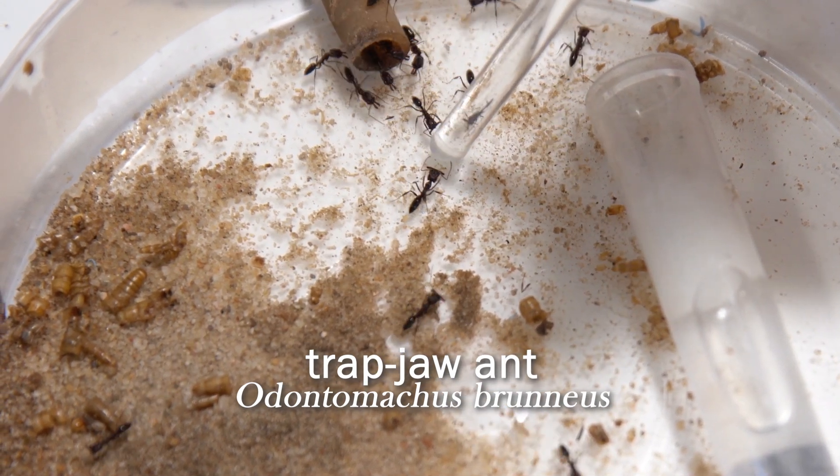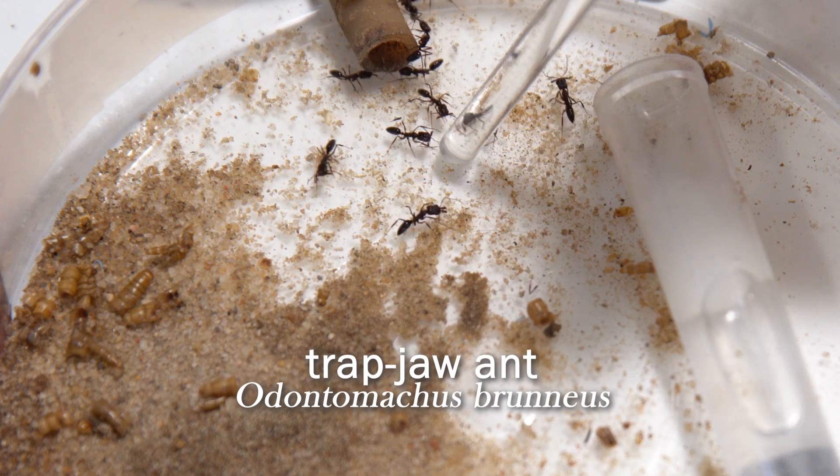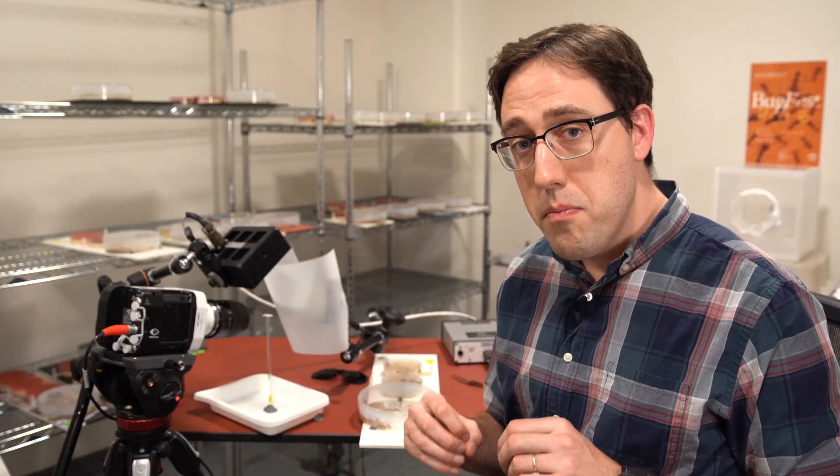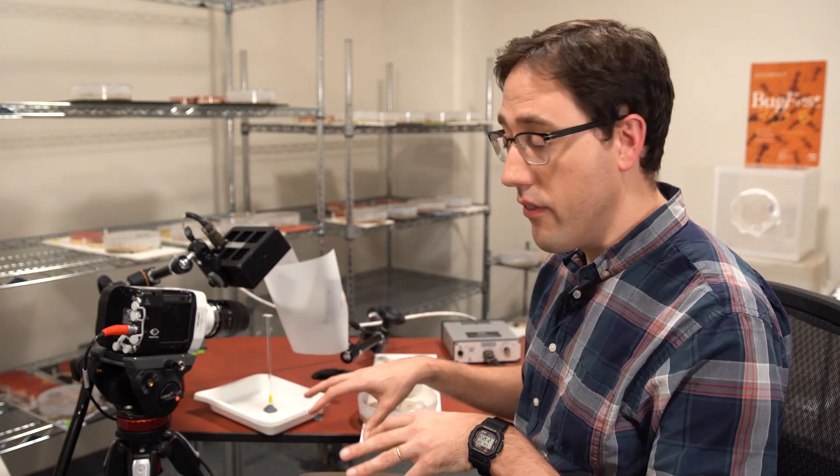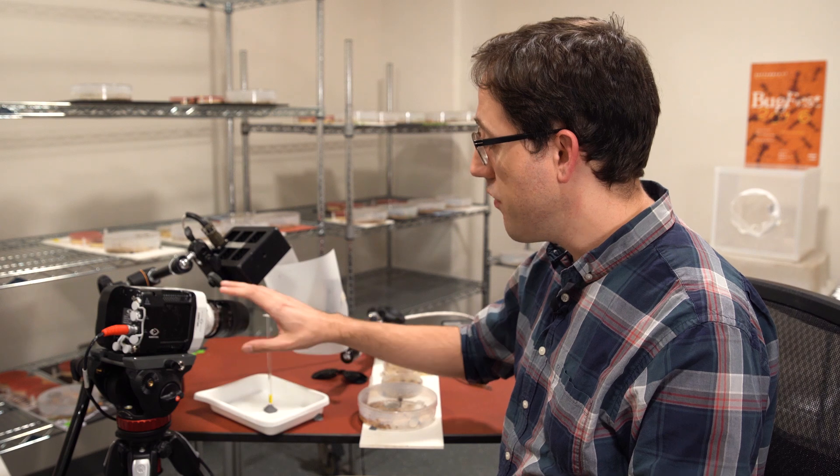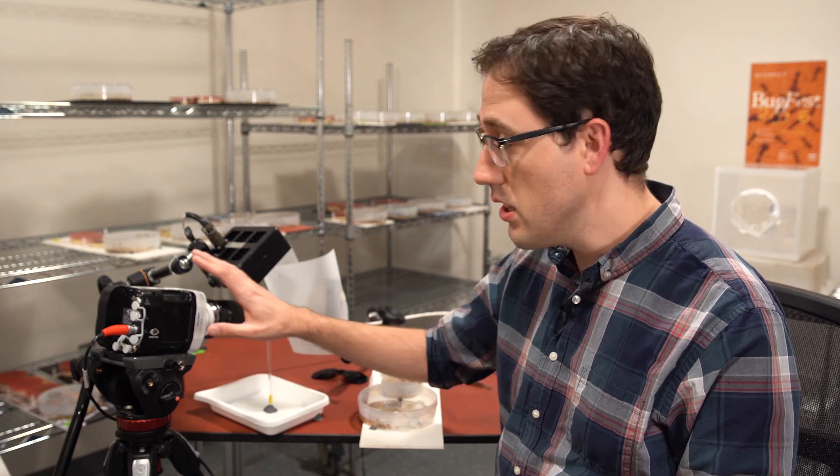And it does seem like something moving at 90 miles an hour, even if it's an ant, would hurt if it hits you. So to capture what a mandible snap against a finger would look like, I've got this set up here in the ant room. This is a high-speed camera, and it's got a macro lens attached to it.